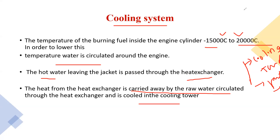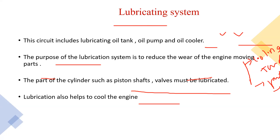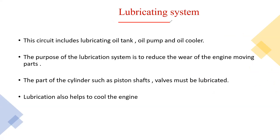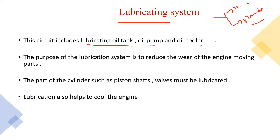The next part is the lubricating system. As you know, whenever there is friction or inertia present in the machines, we provide a lubrication system — whether it is any machine or any plant — whenever there are rotating parts, we provide lubrication for smooth operation. In the diesel power plant, we use a lubricating oil tank, oil pump, oil cooler, and filter. The filter process is used to reduce the impurity present in the oil. These are the parts of the lubricating system.